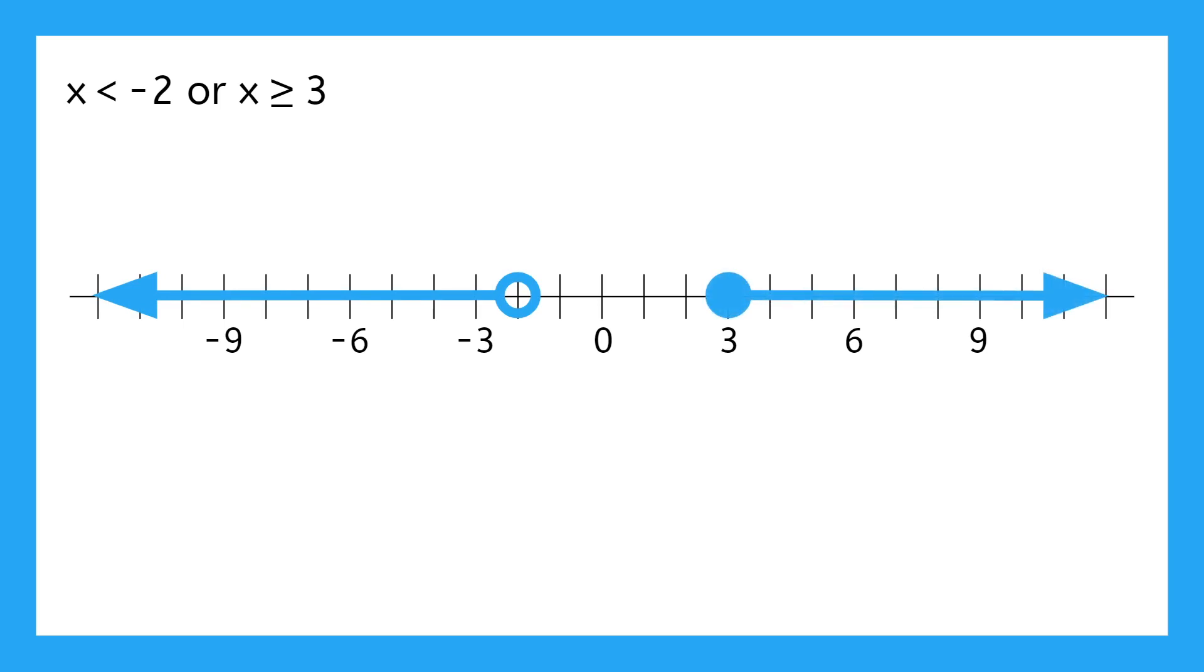Compound inequalities with OR only require that a solution satisfies one inequality OR the other, not both. So negative 5 would work, because it satisfies the less than negative 2 requirement. Or 9 would work, because it satisfies the greater than or equal to 3 requirement. Any part of the number line that is covered is a solution. So then what wouldn't be a solution? Well, the parts that aren't covered. Nothing between negative 2 and 3 is covered, so those numbers wouldn't be a solution here. Notice that this does include the number negative 2, because negative 2 is not included in that less than negative 2 inequality.